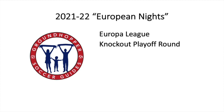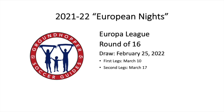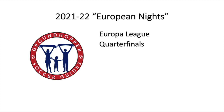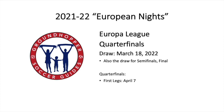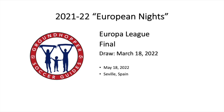Then there's a knockout playoff round — the draw is December 13th and those legs are played February 17th and 24th. After that comes the Europa League round of 16, with the draw on February 25th. Those legs are played March 10th and March 17th. From here on out they are on the exact same schedule week by week as the Champions League. The quarterfinals draw date is the same — March 18th — also for the semifinals and final. The quarterfinals are played April 7th and 14th; the semifinals April 28th and May 5th. The Europa League final this year is May 18th, 2022, in Seville, Spain.